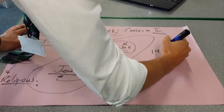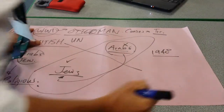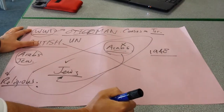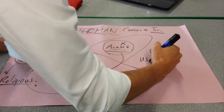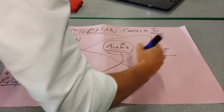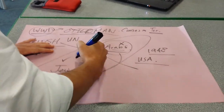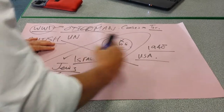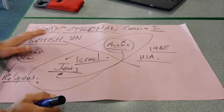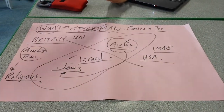In 1948 — an important date to remember — the USA recognised and created the independent state of Israel, the first and only Jewish state in the world.